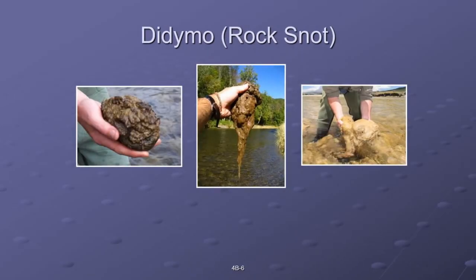Then there's Didymo — at least it has a cool name, or 'rock snot.' It alters stream ecology by forming dense algae blooms that can cover up to 100% of stream bottoms. It's a microscopic alga that can be spread in a single drop of water. It's currently in California, Idaho, the Midwest, and Eastern states. As of the publication here — 2008 — we don't have it yet.